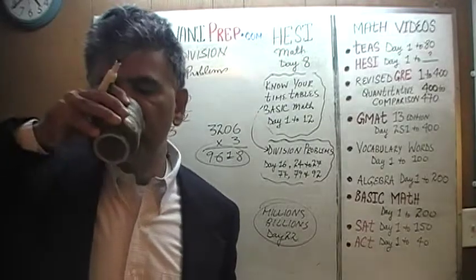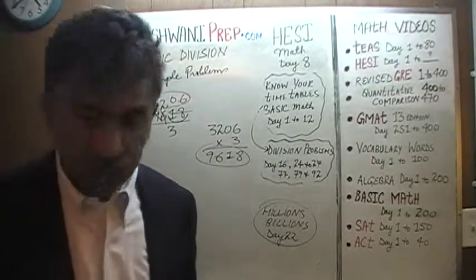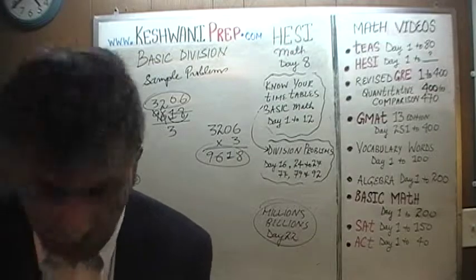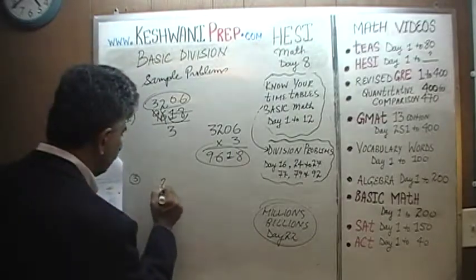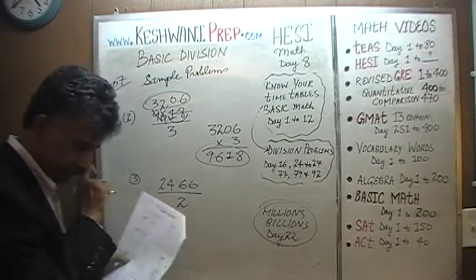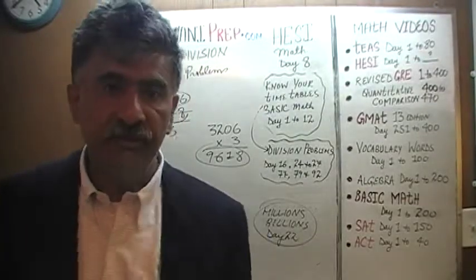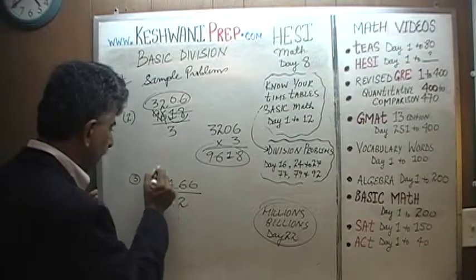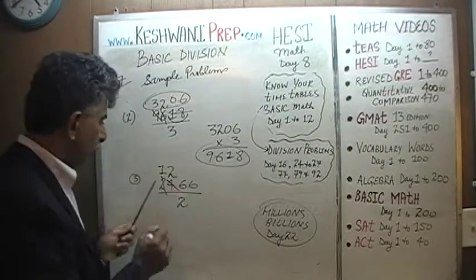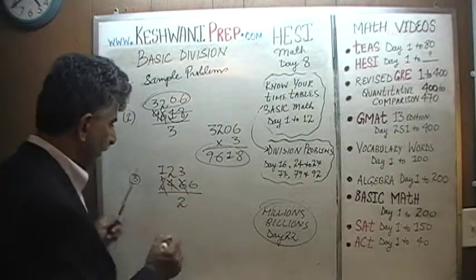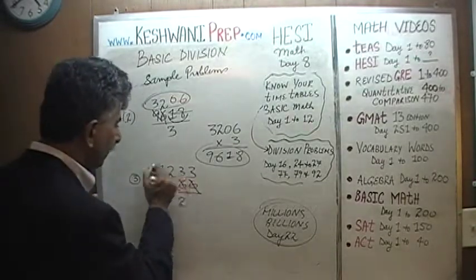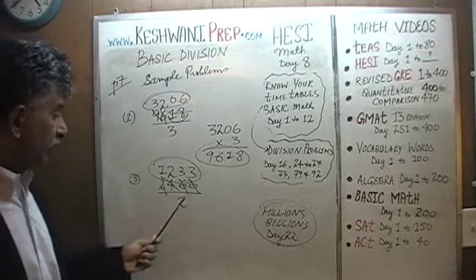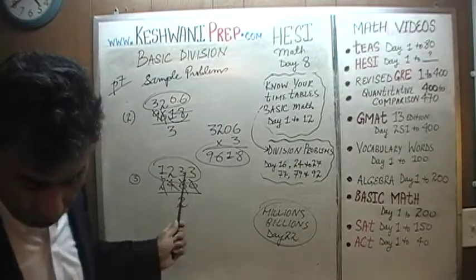Number 3 is even simpler — it's very straightforward. Number 3 is just dividing by 2; it can't be any easier than that. 2,466 divided by 2. This is in fact so easy you almost don't have to do anything. How many 2s does 2 have? 1. How many 2s does 4 have? 2. How many 2s does 6 have? 3. The answer is 1,233. And if you were to multiply 1,233 by 2, you will get back what we started with. I'm not going to do it because it's too simple.